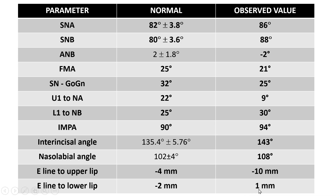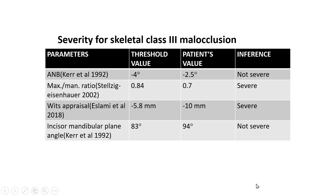E-line to lower lip was 1 mm — it was protrusive and forwardly placed. The lower lip was prominent and upper lip was retrusive. For severity assessment of skeletal Class 3 malocclusion, the ANB value was minus 2.5 — not severe. However, the maxillomandibular ratio indicated severe, Weed's appraisal indicated severe Class 3 malocclusion, and the incisor mandibular plane angle was 94 degrees — not severe.